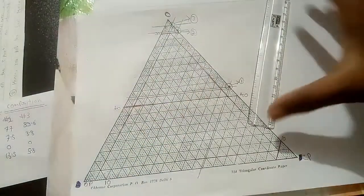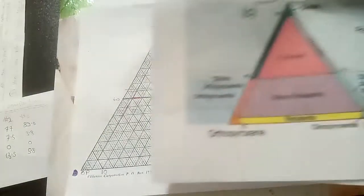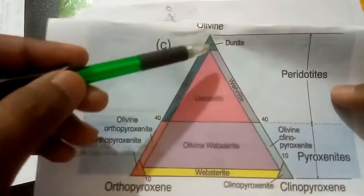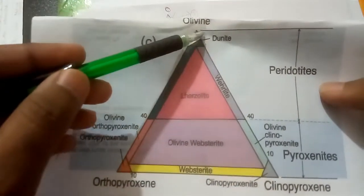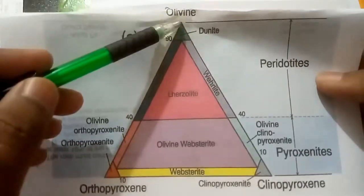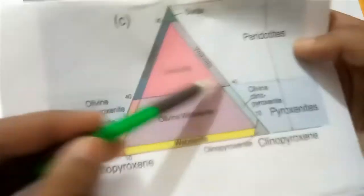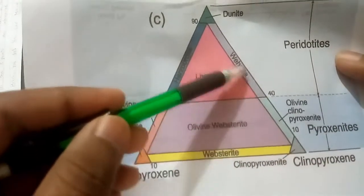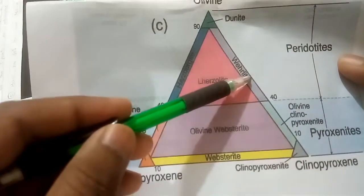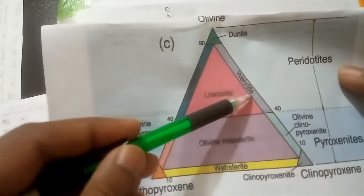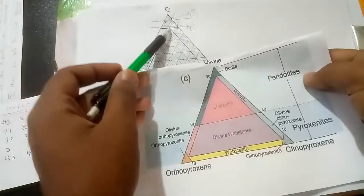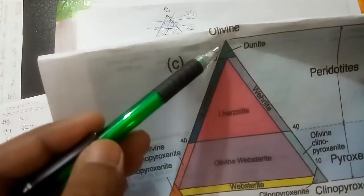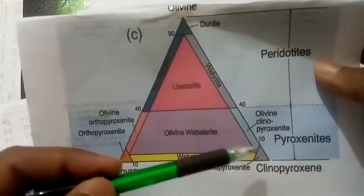Now we will see in the diagram. Our two points are on this line. All the points are only on this line because our orthopyroxene was 0. The first point comes here above 40. So above 40 you know this line, it was Wehrlite. So our first one is Wehrlite. And our second and third it comes above 90. Above 90 it is Dunite. Second and third is Dunite and the first one is Wehrlite.